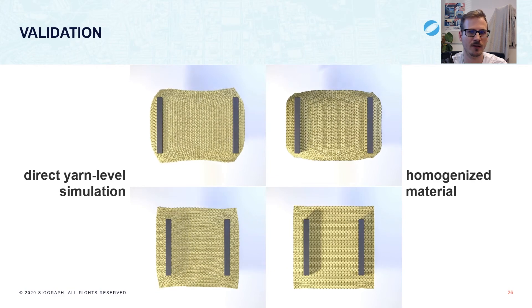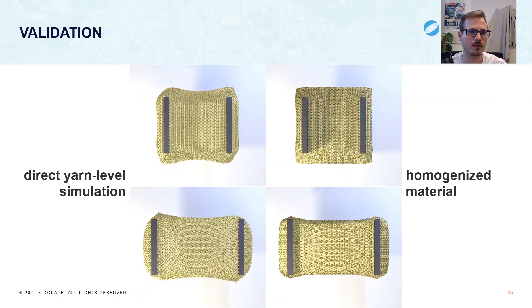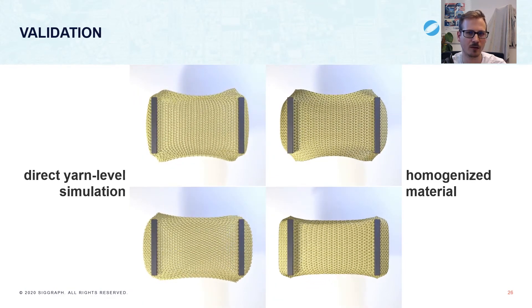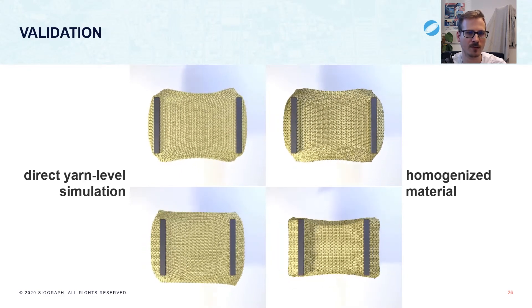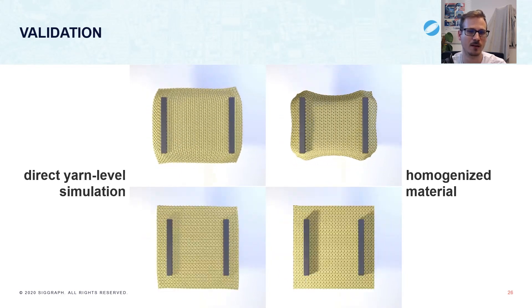Here, we compare stretching knitted cloth along two directions. Our material is able to mimic the effect of yarn loops pulling on each other to preserve area. We also see a slightly different stretching resistance along the other direction.